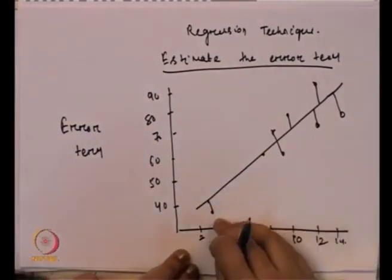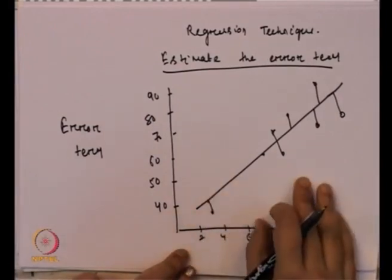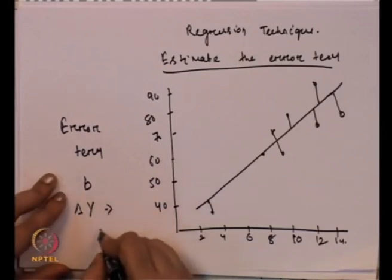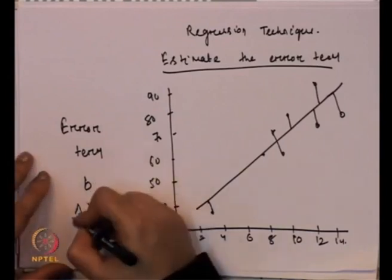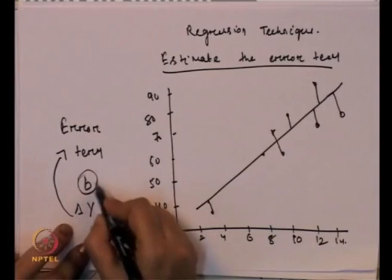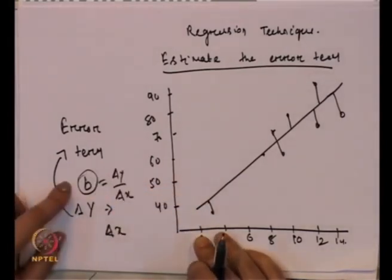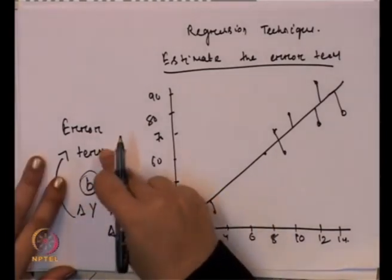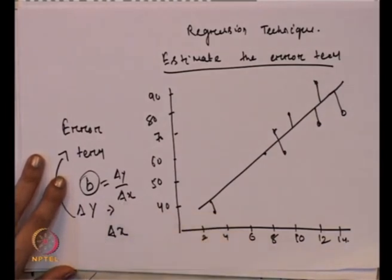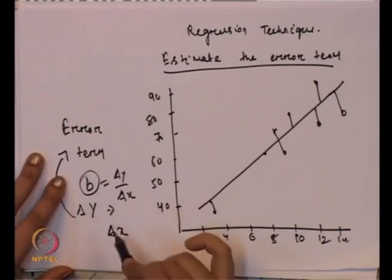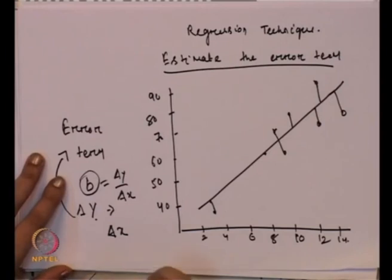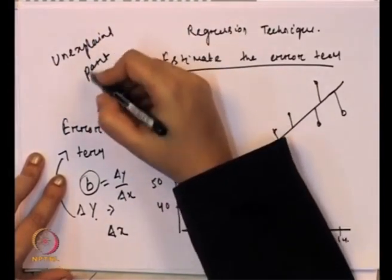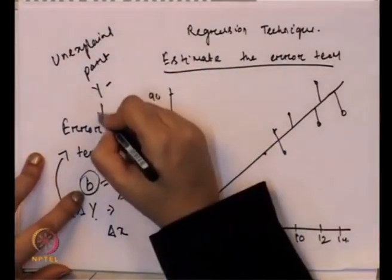All the actual data points do not fall on the regression line; there may be some deviation from the regression line. Since all actual data points are not on the regression line, this leads to some error term in the model. Why do we call it an error term? Because there is a deviation between the regression line and the actual data points. Since there is an error term, the slope B does not explain the total change in Y with respect to change in X. There is some unexplained part of Y, and this unexplained part of Y is generally the error term.